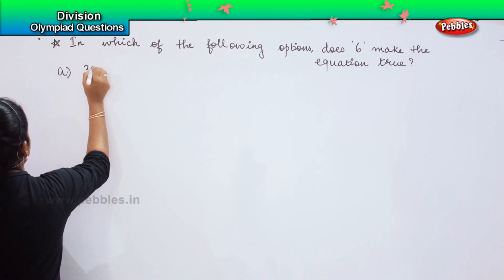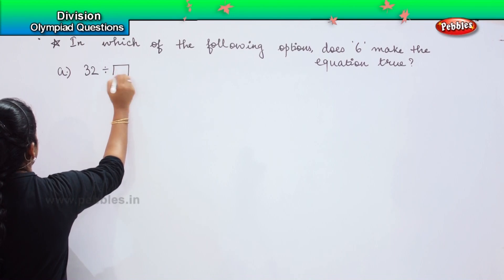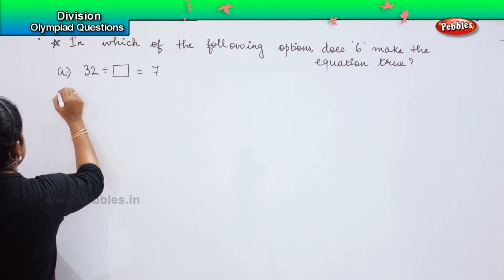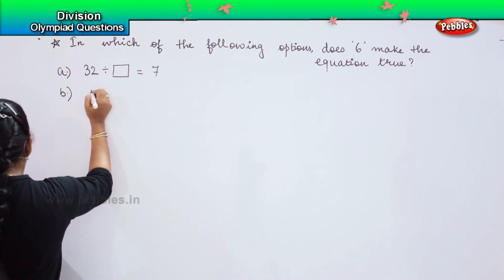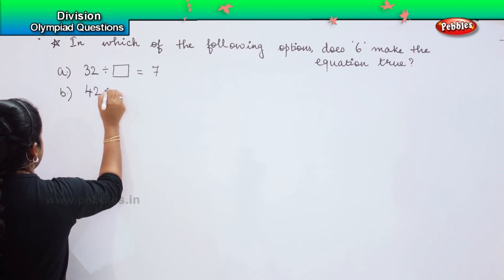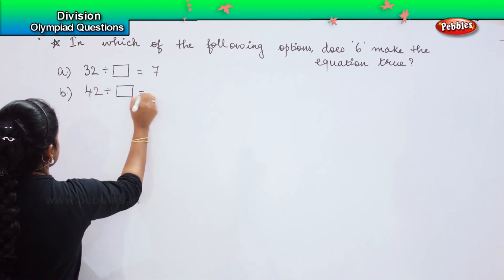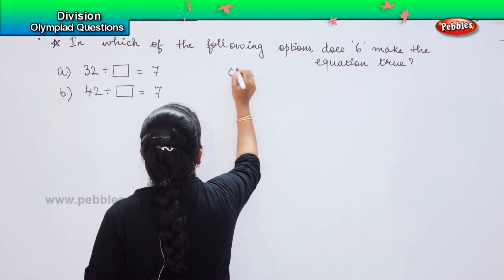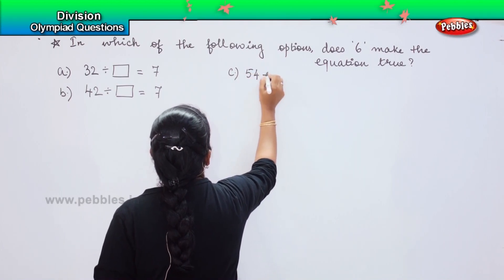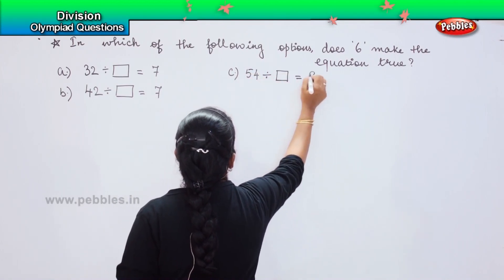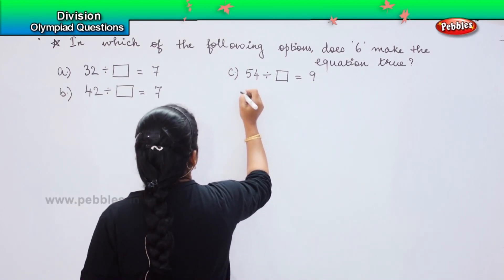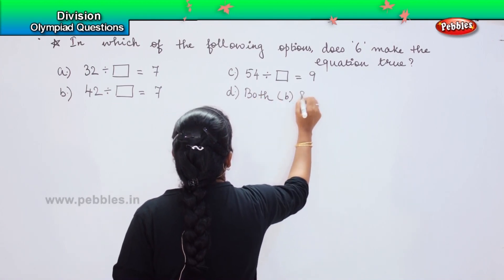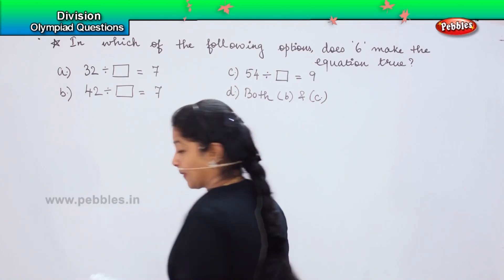32 divided by something equals 7. The second one says 42 divided by something equals 7. The third one says 54 divided by something equals 9. And the last one says both B and C.